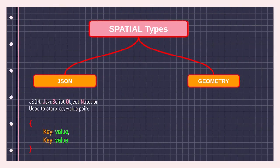For special data types, you have two main types: JSON and geometric. Geometric is the main one, but I've also added JSON. Geometric data types are for storing geometric information.